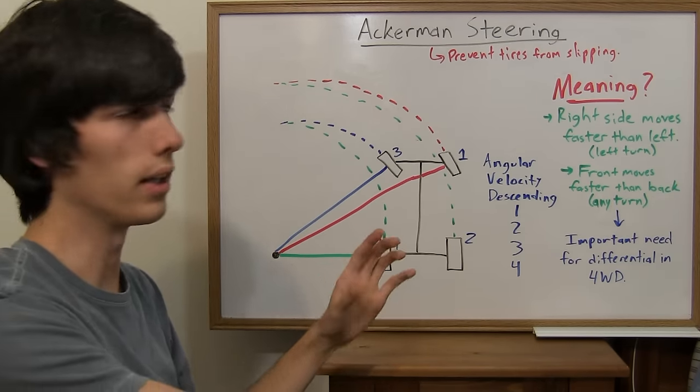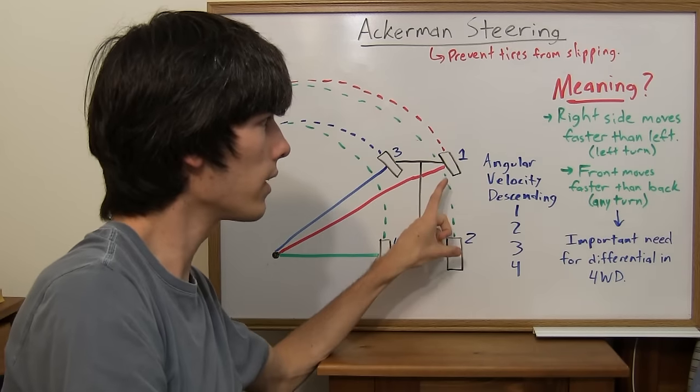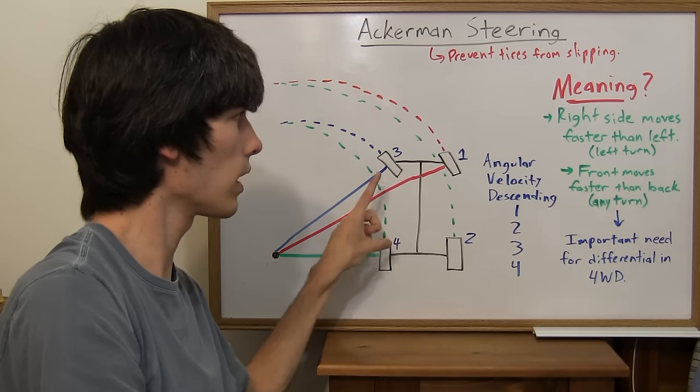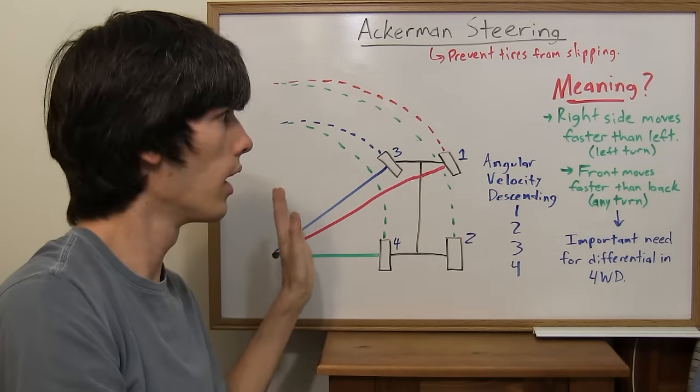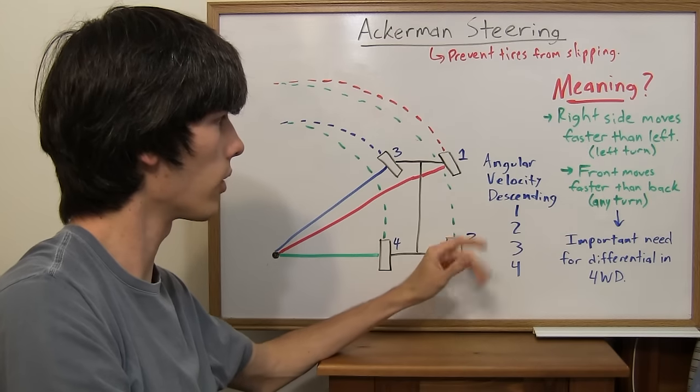What does this mean? This means your right side is moving faster than your left side when you go in a left-hand turn, and vice versa if you go in a right-hand turn.